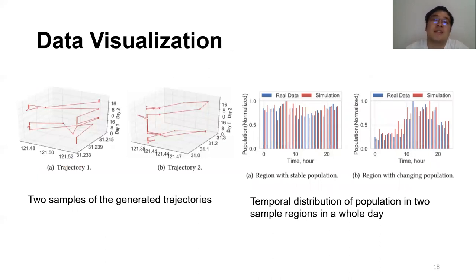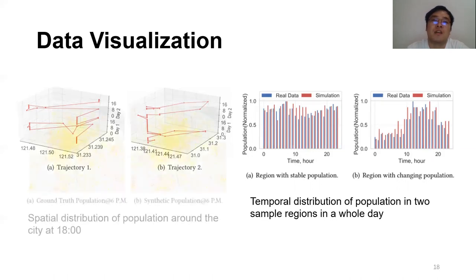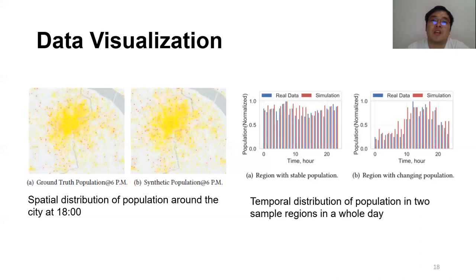We also visualize the synthetic data quality from different views. Two sample generated trajectories show that they follow important mobility regularities including spatial continuity and temporal periodicity. The right figure presents temporal population variation of two similar regions, showing that the temporal aggregation of synthetic data is very similar to real data. The spatial population distribution of synthetic data and real data are also very similar, further demonstrating the high quality of our synthetic data.